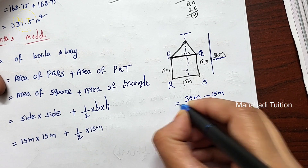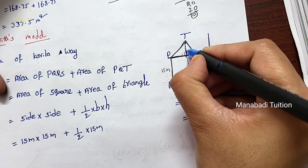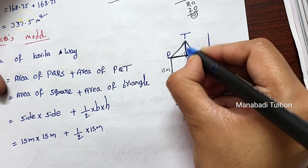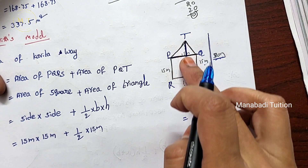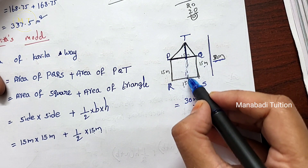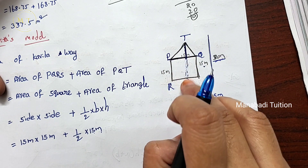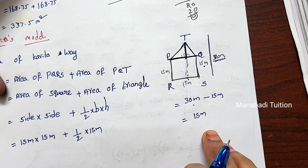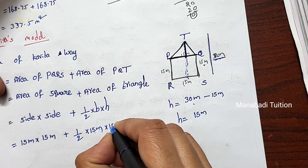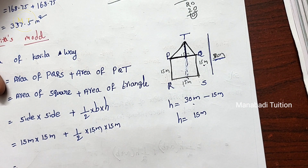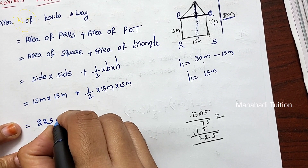In the same way, you can subtract 15 meters. This is the height of the triangle. The total of the line is 30 meters; you subtract 15 meters, so the height of the triangle is 15 meters. Equal to 15 × 15 — you multiply it: 225 square meters.